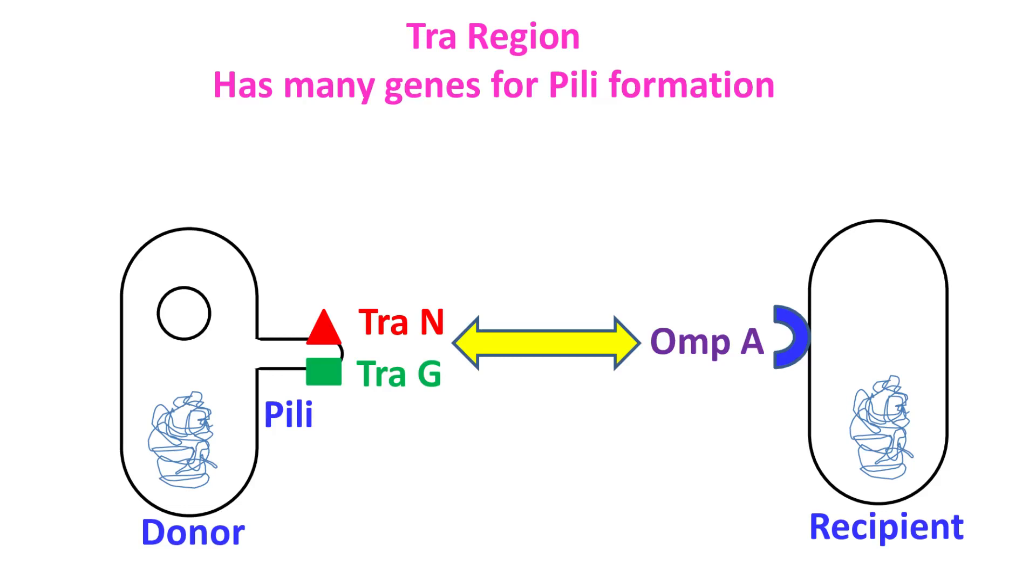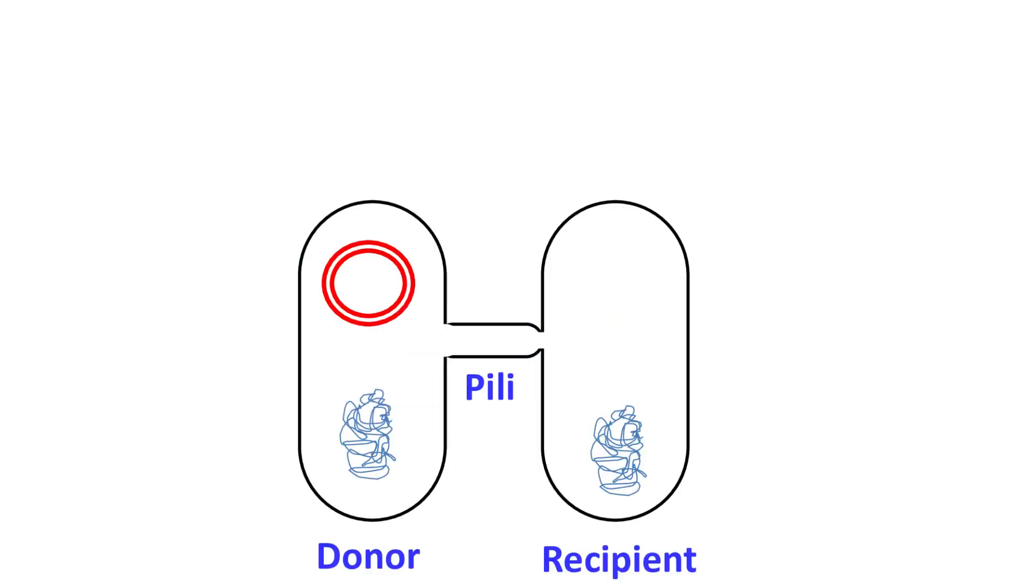Once the contact of the donor cell is made with the recipient cell, the transfer of F-plasmid DNA initiates from the OriT region.